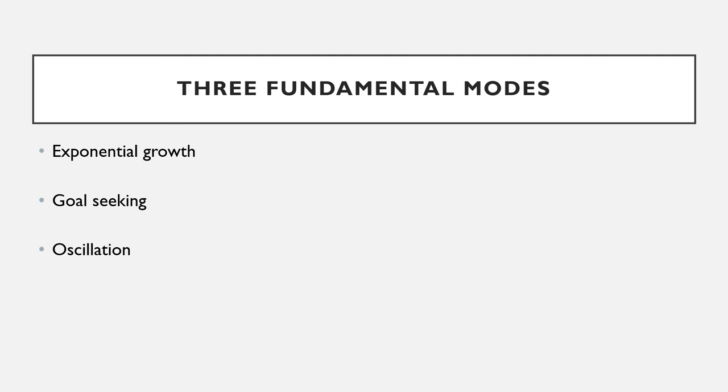More complex patterns of behavior, such as S-shaped growth, growth with overshoot, and overshoot and collapse, result from the non-linear interaction of these basic feedback structures.